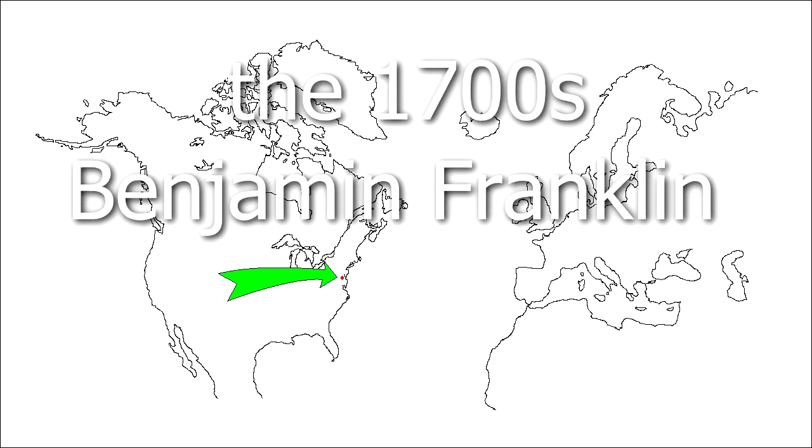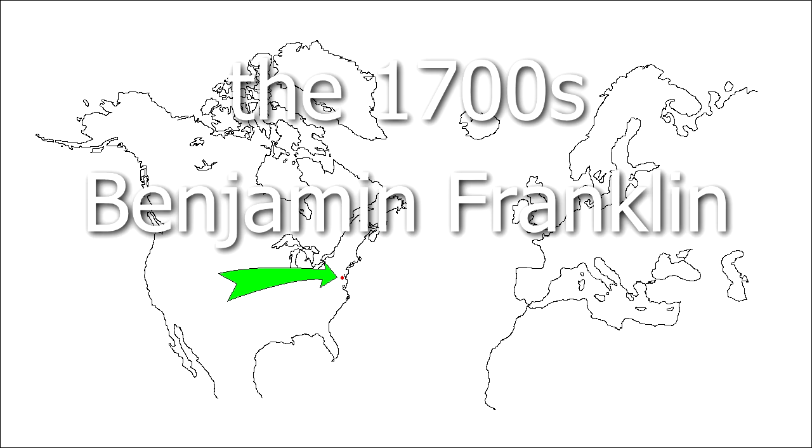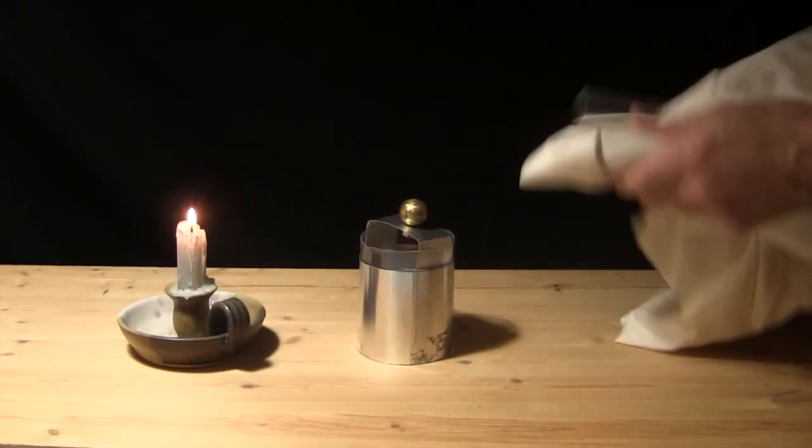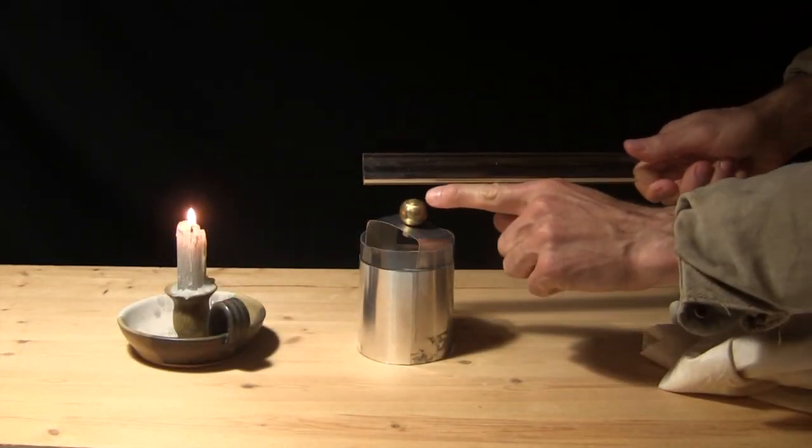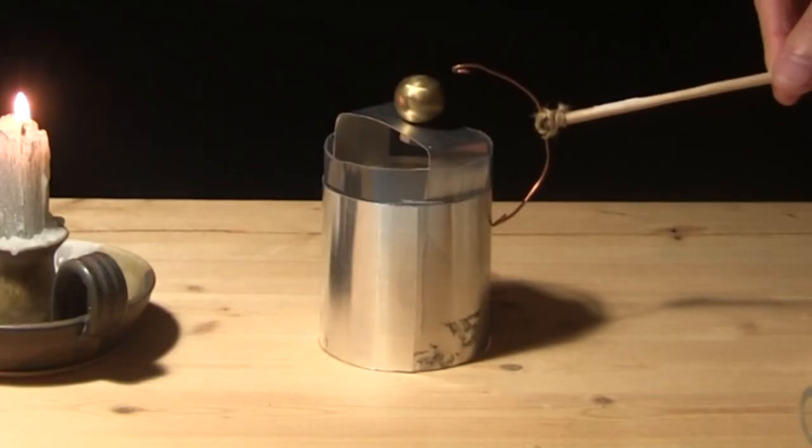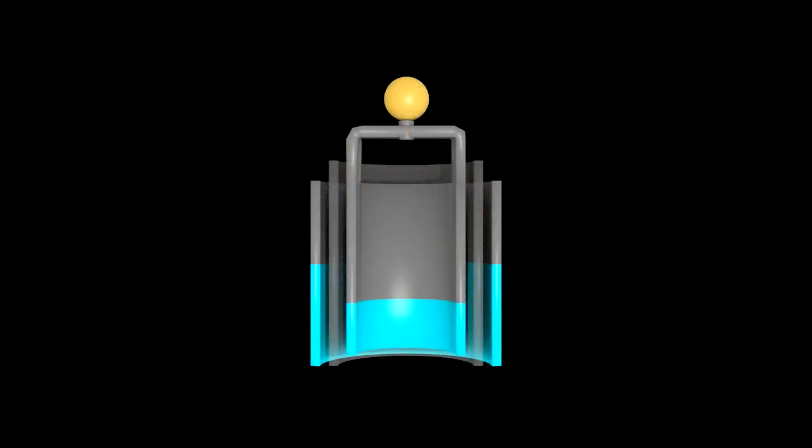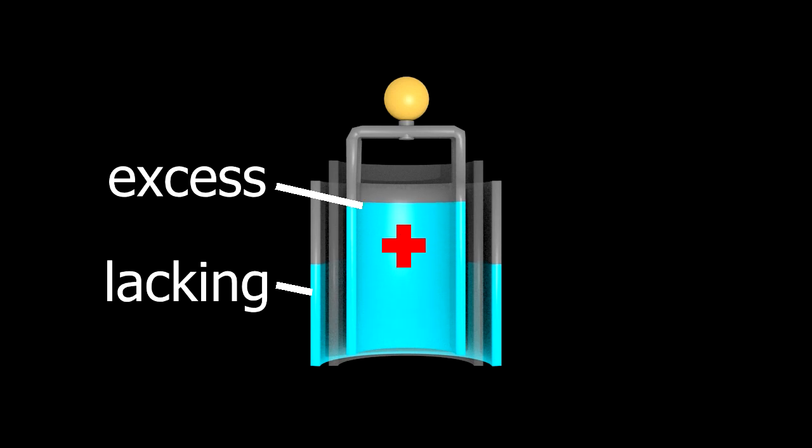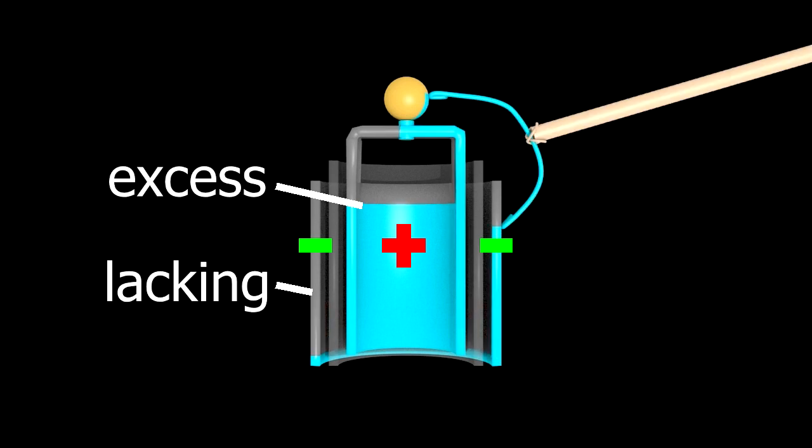But back in the 1700s, no one knew about the existence of electrons or protons. At the time, Benjamin Franklin did a lot of experimenting using charge from a Leyden jar or capacitor. He theorized about an electric fluid, and chose that an excess of electric fluid would be positive and the lacking of electric fluid would be negative. To Franklin, it followed that the fluid would move from the positive area with excess fluid to the negative area that lacked fluid.